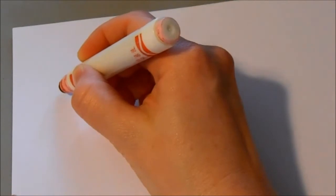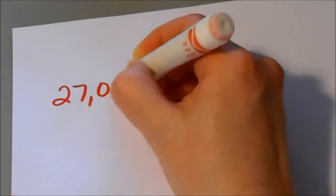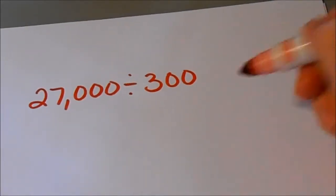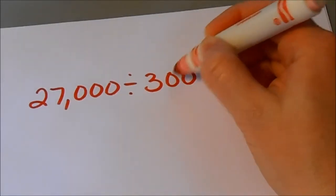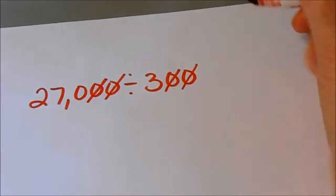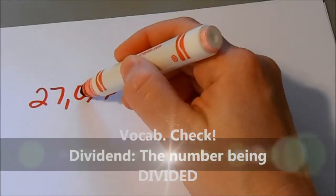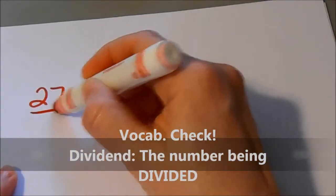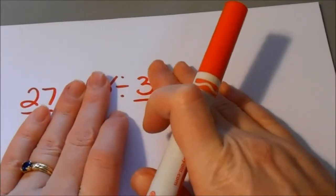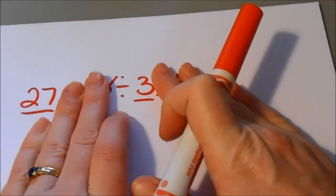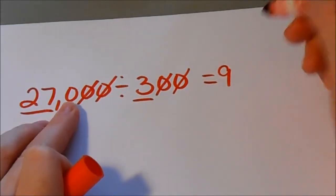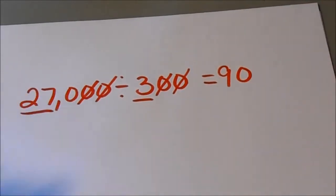Let's say we have 27,000 divided by 300. I've got two zeros in the divisor, so I take two zeros away from the dividend. That means I'm left with one zero in the dividend. My significant numbers are 27 and 3. I do 27 divided by 3, which is 9, and then I've got that one remaining zero. So my answer is 90.